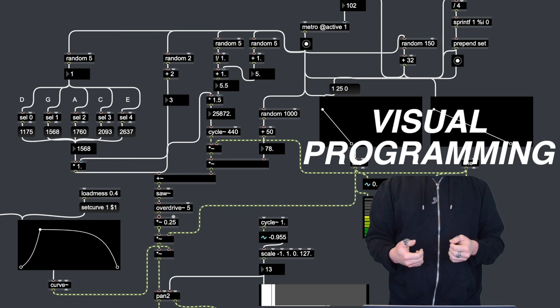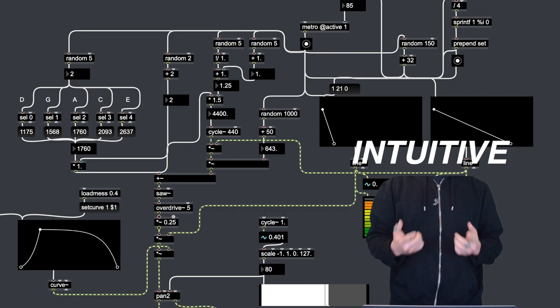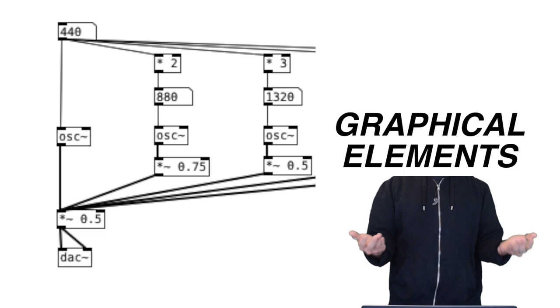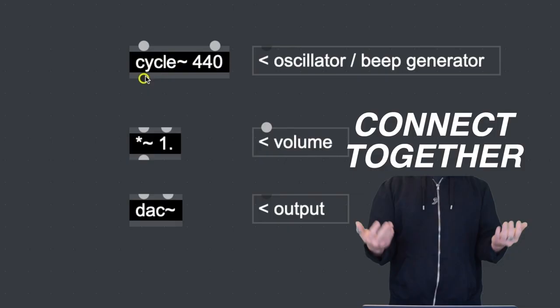You may find visual programming to be more intuitive and easier to get the hang of. Rather than typing text exclusively to program, we program by using graphical elements. In a nutshell, we just connect a bunch of boxes together via cables and make sounds.